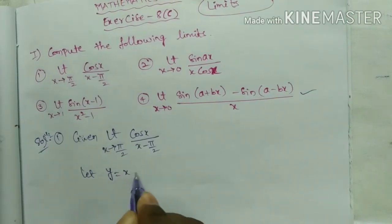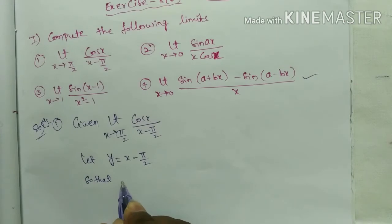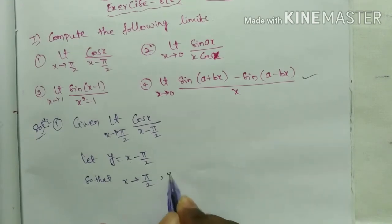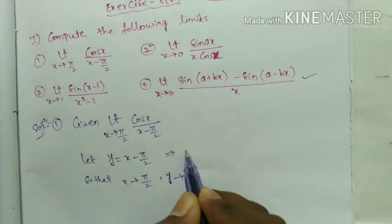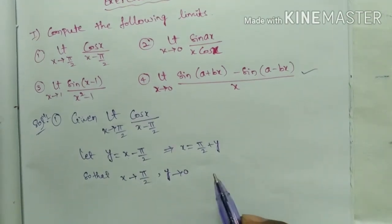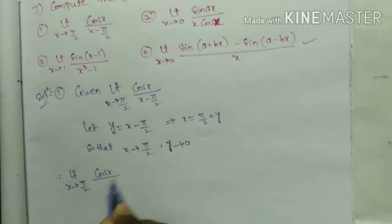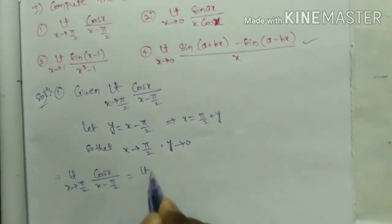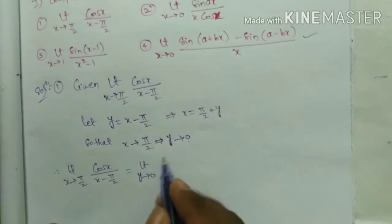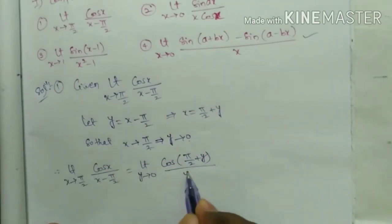Let y = x − π/2, so that when x tends to π/2, substituting π/2 − π/2 gives y tends to 0. This implies x = π/2 + y. Therefore, limit x tends to π/2 of cos x / (x − π/2) converts to limit y tends to 0 of cos(π/2 + y) / y.